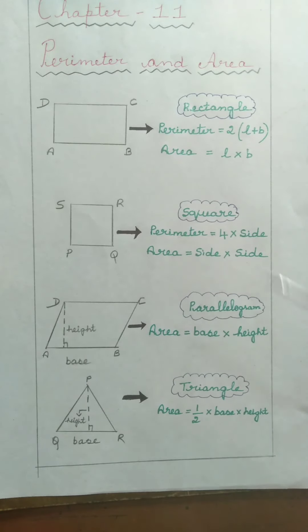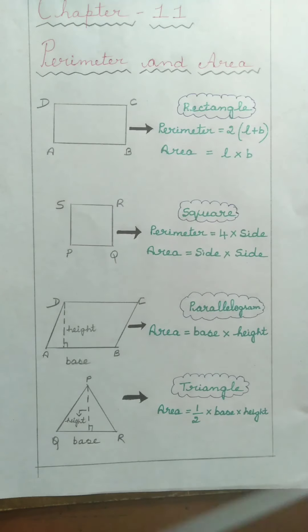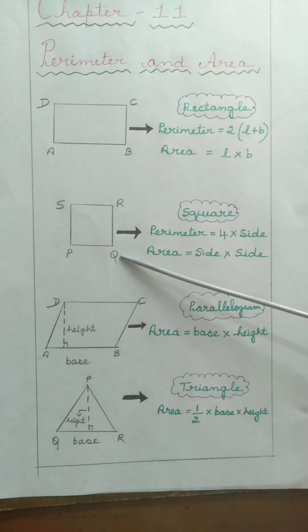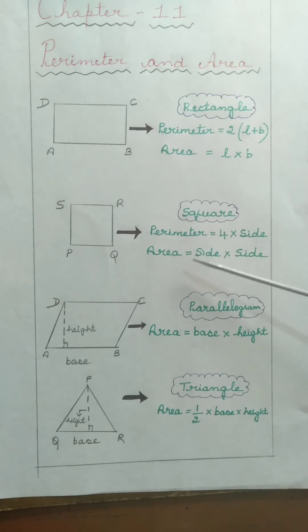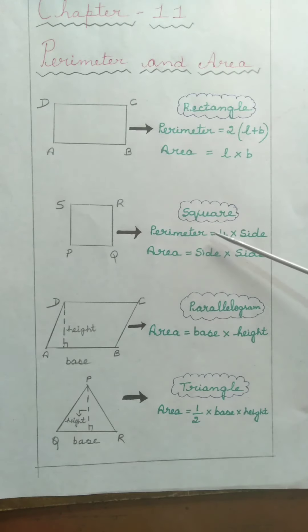Next, we shall move on to square. A square is a closed figure where all 4 sides are equal: PQ equals QR equals RS equals SP. Each angle in a square is equal to 90 degrees, so angle P equals angle Q equals angle R equals angle S equals 90 degrees. The perimeter of a square equals 4 × side, and the area of a square equals side × side.